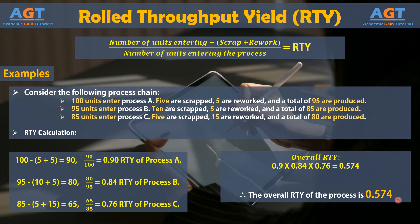Rolled throughput yield doesn't provide an indication of final production or sales, but a low rolled throughput yield indicates that there is waste in the process in the form of rework.